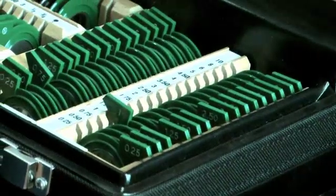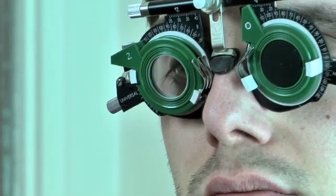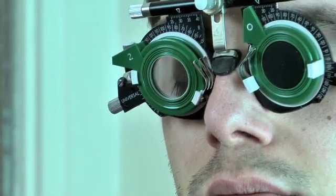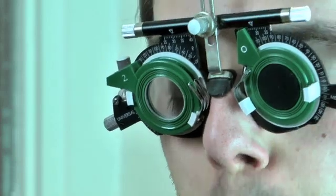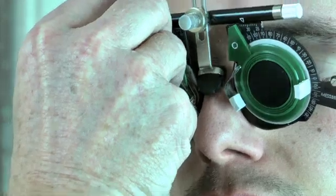That's the plus two, so he's now got plus three in the trial frame. If he says that is worse than it was with the plus one extra added, we can then reduce it. So we take the two out, and we can put a plus 1.50 in.